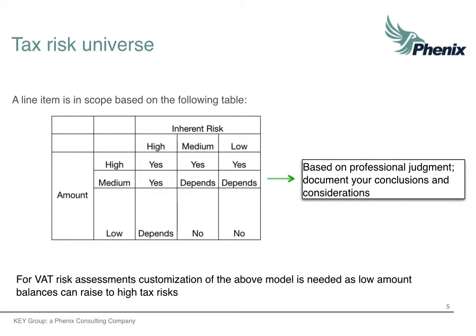Slide 13 is about how the tax risk universe looks like. The result of the risk assessment — materiality and inherent risk — is shown in this table. This table shows a decision tree that is used in making scoping decisions. On the left, the possible result from a materiality perspective is shown, and on the top the results from the inherent risk are shown. On the inner set, the conclusion is given whether or not a risk is in scope. For example, if risk from a materiality perspective is high — top row — then regardless of the inherent risk, the conclusion is that the risk is in scope.